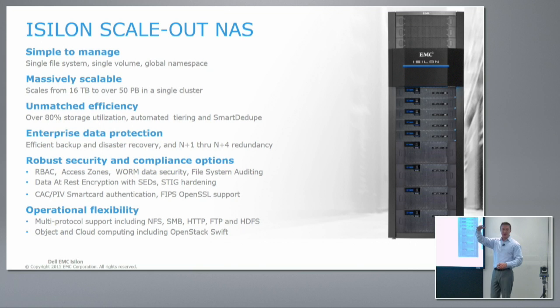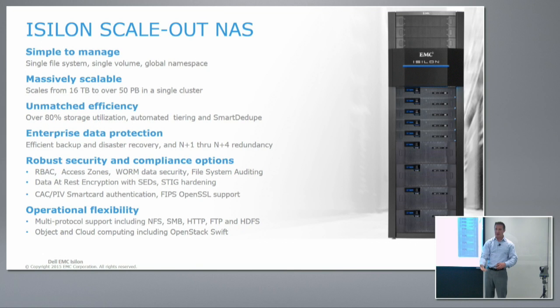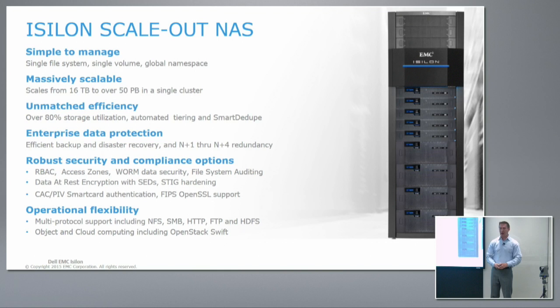We have an example of a customer who had water pipes over their data center that developed a leak. Water dripped down onto the Isilon cluster, took out a node, and the data rebuilt across the remaining nodes. Then it seeped into the next node and killed it, and the data rebuilt again. They got the alert and fixed it in time. At some point it would have been a problem if all nodes were consumed, but it's a pretty interesting story about how resilient this thing is.